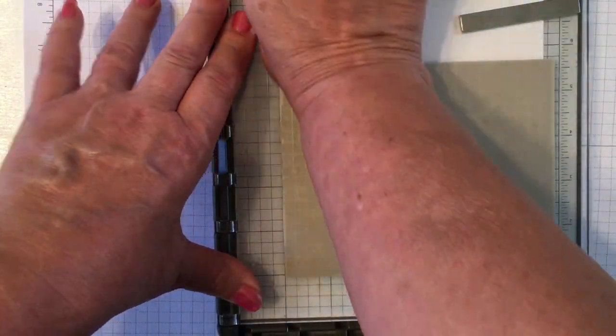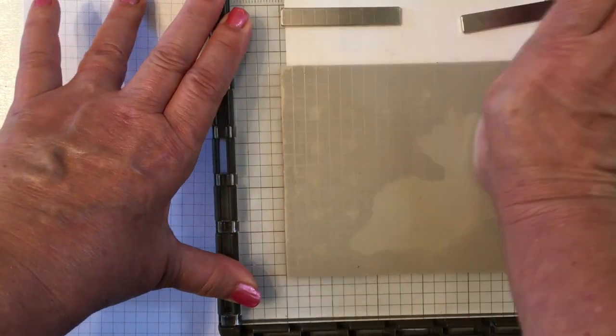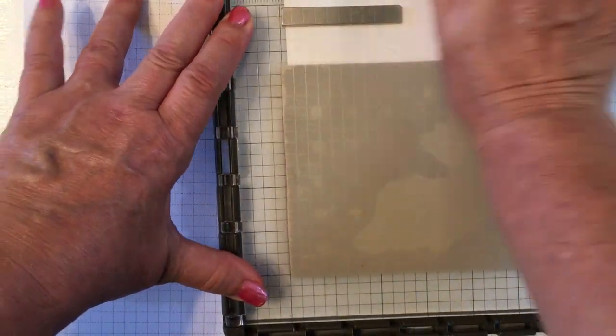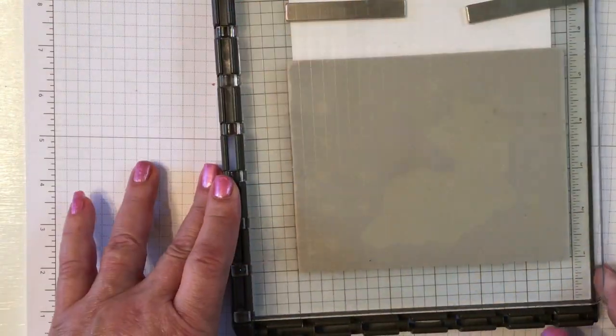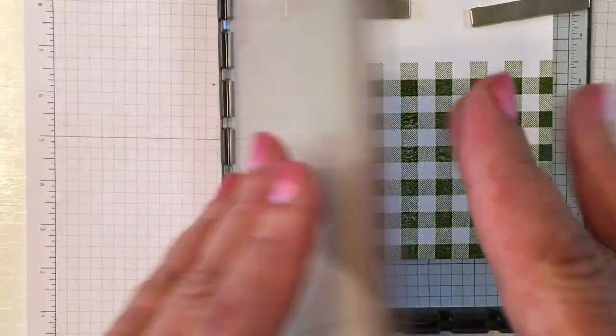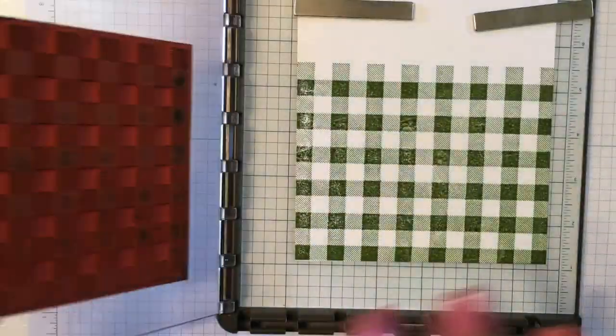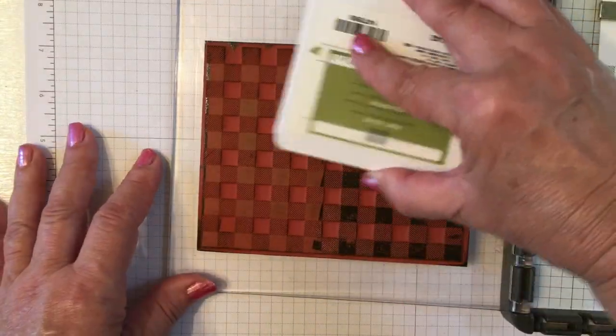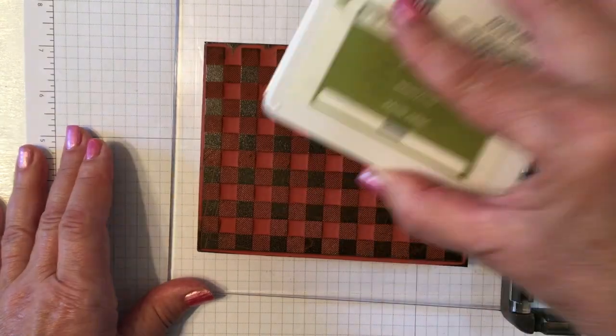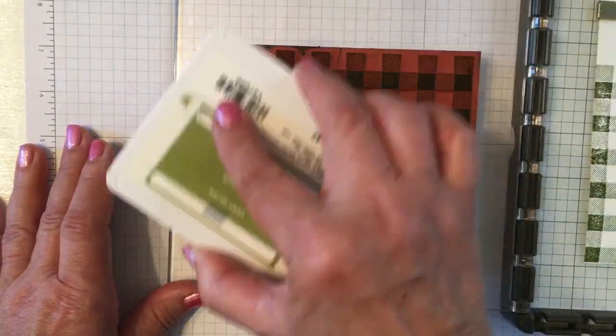You want to start by inking up your stamp real well. I'm using a Stamparatus because you'll find that you need maybe two or three times to get a good finish. You can see I missed some there so just go back and rub that and it's not quite as evenly inked as I would like so I'm going to go back and stamp a second time.